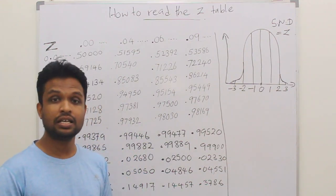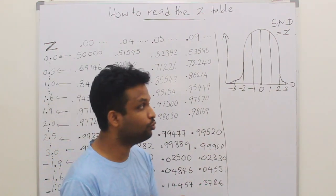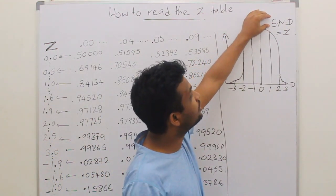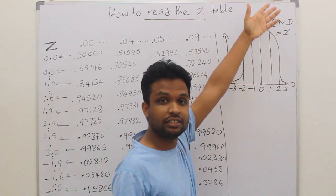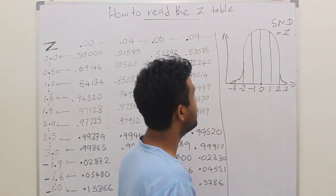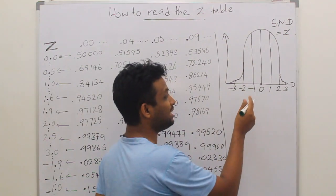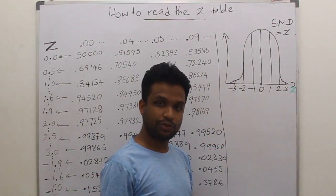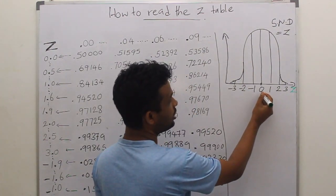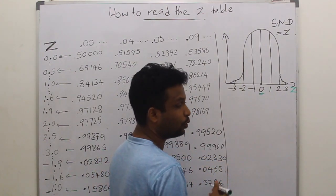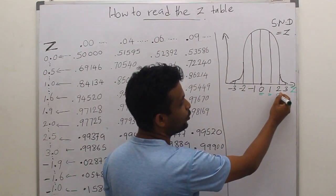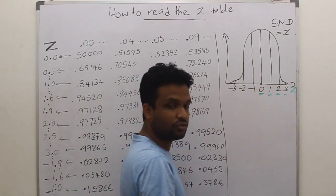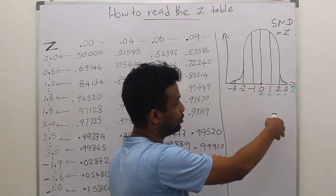In Z distribution, which we call standard normal distribution, on the X axis we have the Z values. Here, the Z value is 0, Z value is 1, Z value is 2, Z value is 3, and so on.